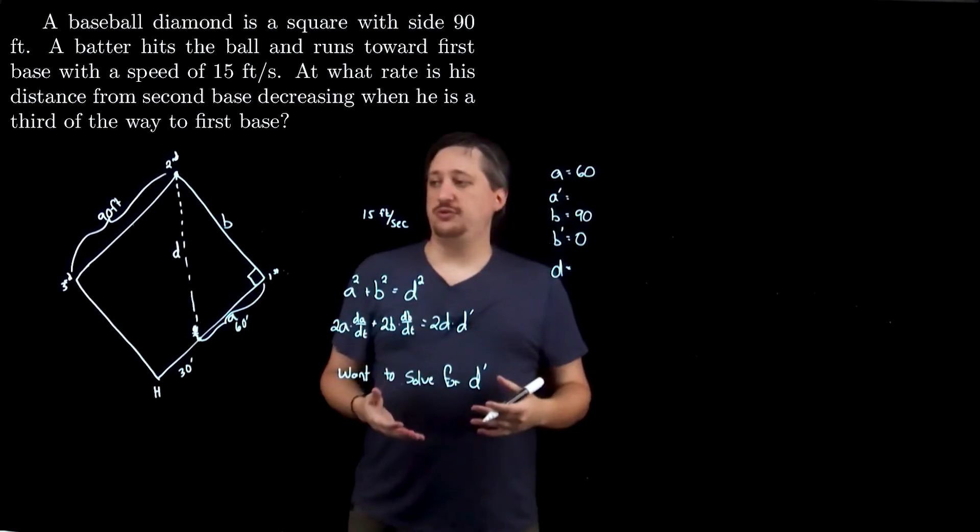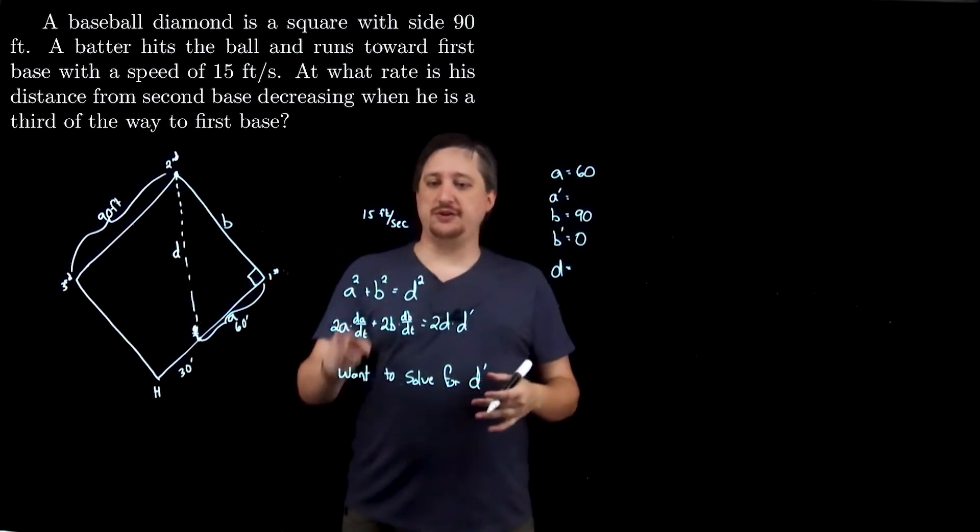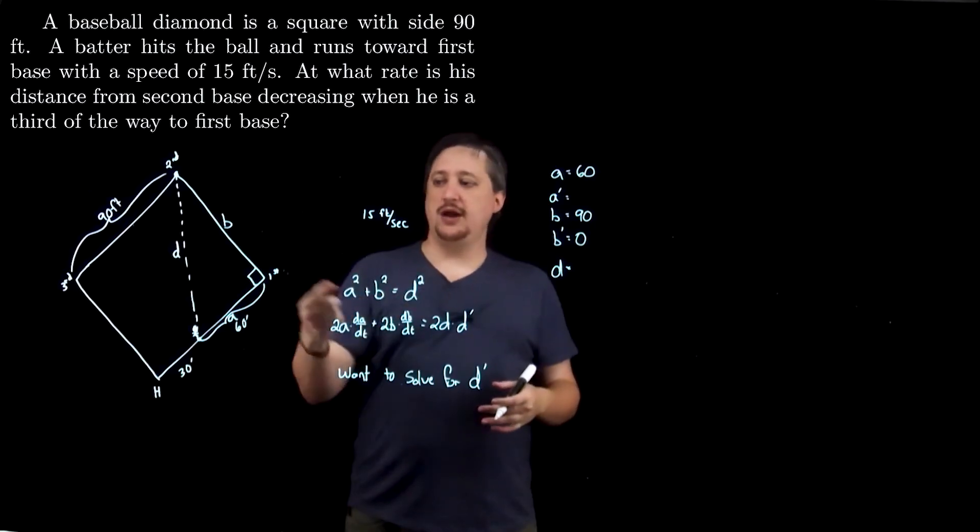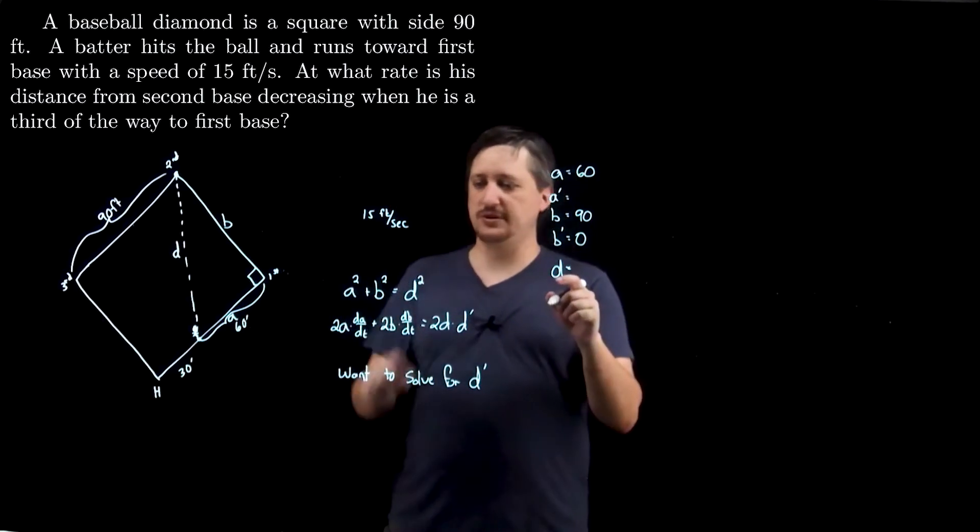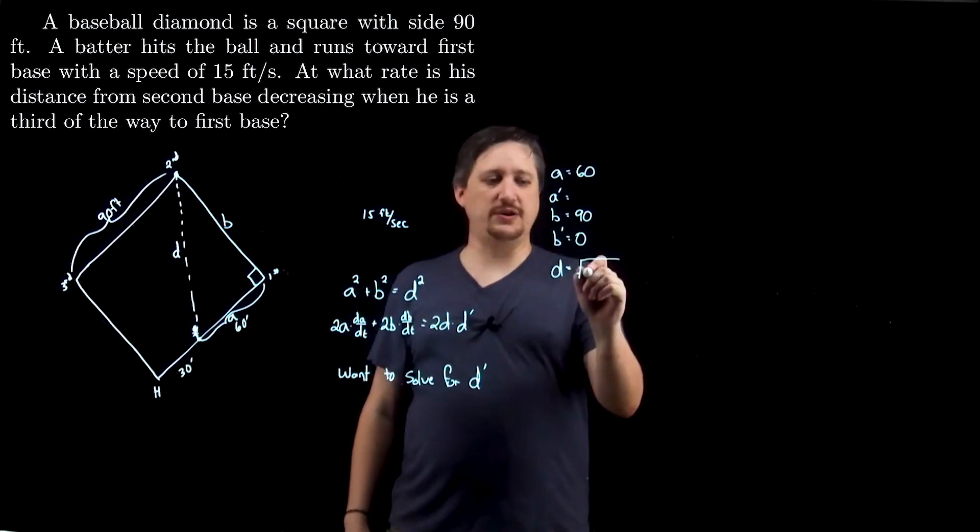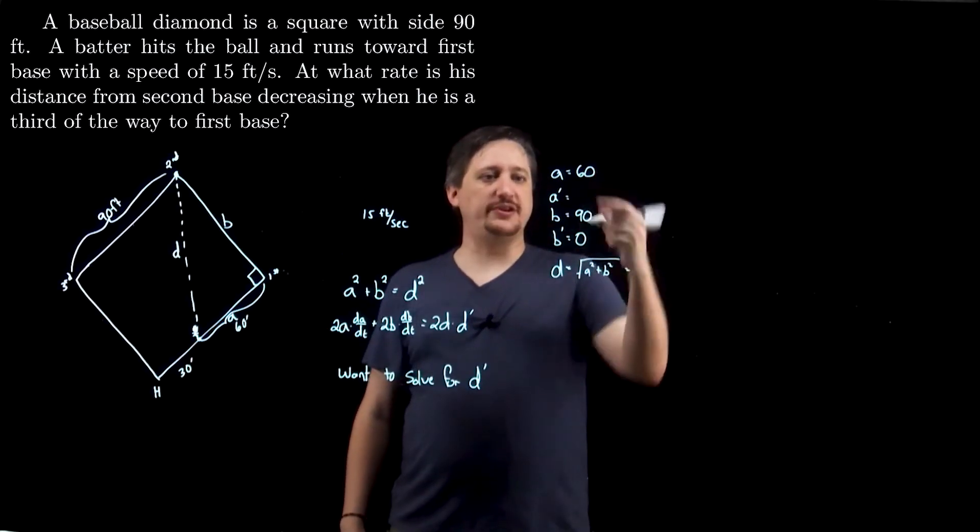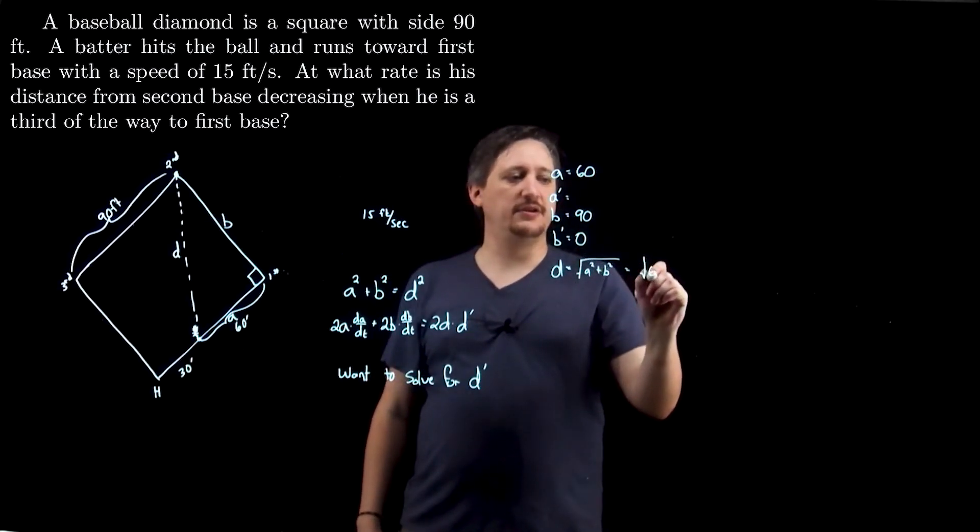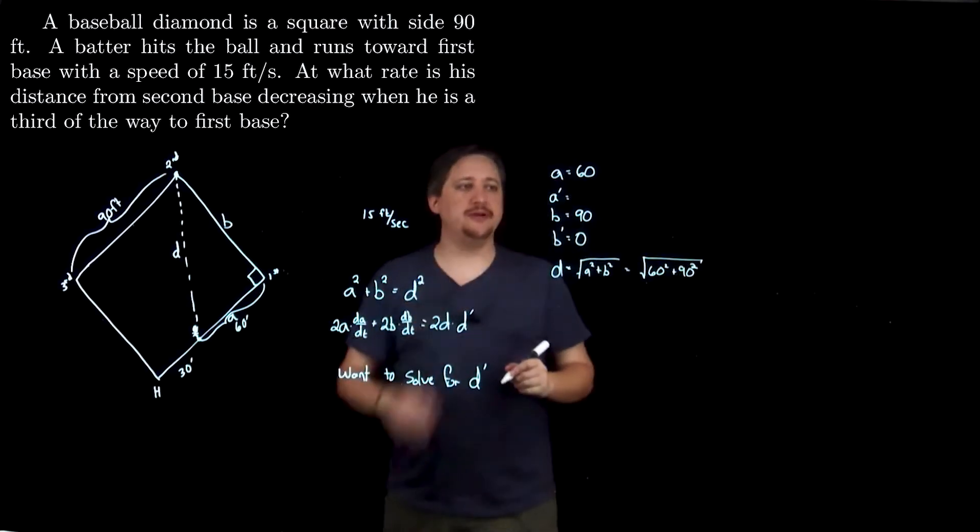I'm going to skip a prime for a second. B, well, that doesn't change, right? So it's 90 feet no matter what. But importantly, it doesn't change. So the change with respect to time is zero. It's staying the same the whole time.